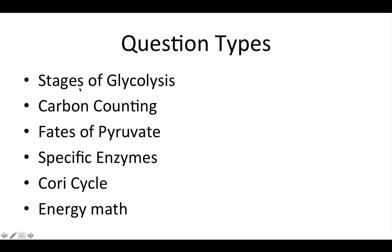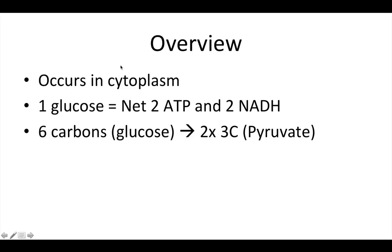In terms of carbon counting and the stages of glycolysis, you don't really need to understand the biochemical structure or be able to draw the structures of these things, so don't stress out about that. Glycolysis occurs in the cytoplasm and one glucose gets turned into a net two ATP and two NADH. We start with six carbons and end up with two three-carbon molecules named pyruvate.